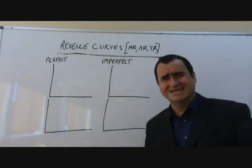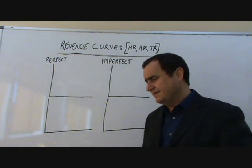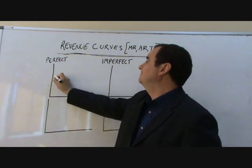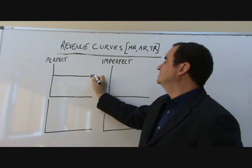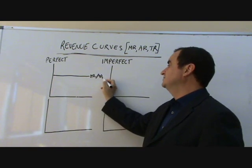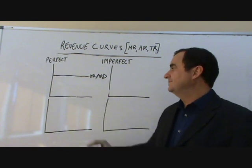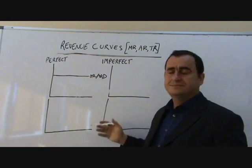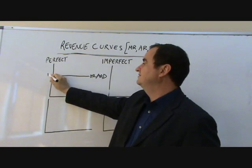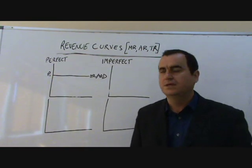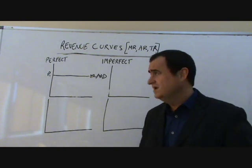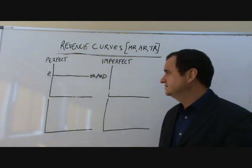So let's start with perfect competition. Marginal revenue — which is the extra revenue gained from each additional sale — will be a horizontal line. That's also the average revenue curve, because it's also the demand curve. That's because firms in perfect competition face a perfectly elastic demand curve. They sell all their goods at price P1 and cannot raise their price.